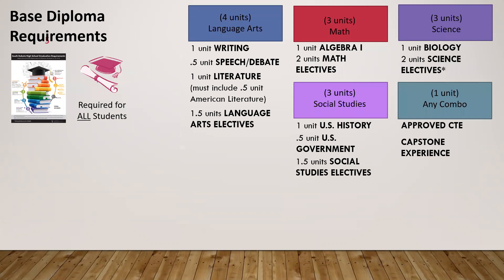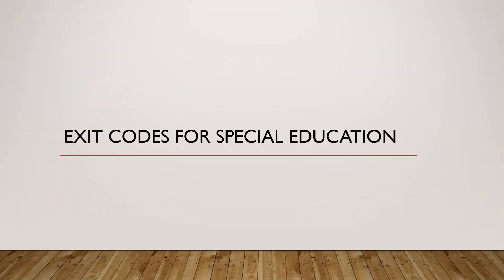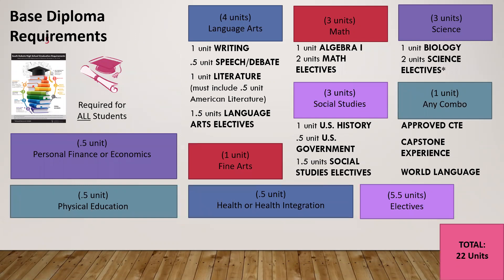For Language Arts, students need one unit of writing — we talk about units as credits — a half unit of speech or debate, one unit of literature (half must be American literature), and one and a half units of Language Arts electives. For Math, they need Algebra 1 and two other math electives. For Science, it's Biology and two science electives. For Social Studies: one unit of U.S. History, a half unit of U.S. Government, and one and a half units of other social studies electives.